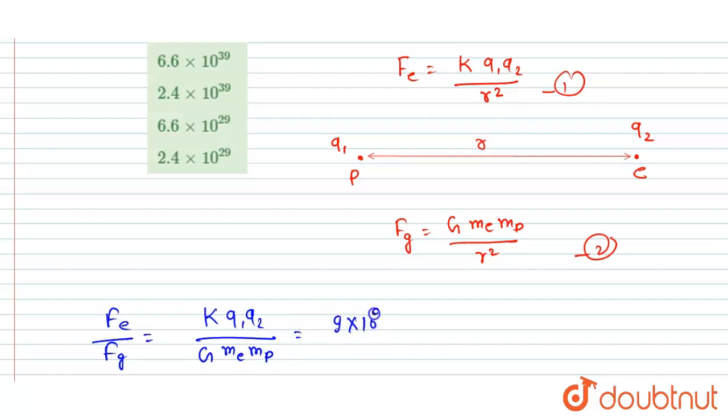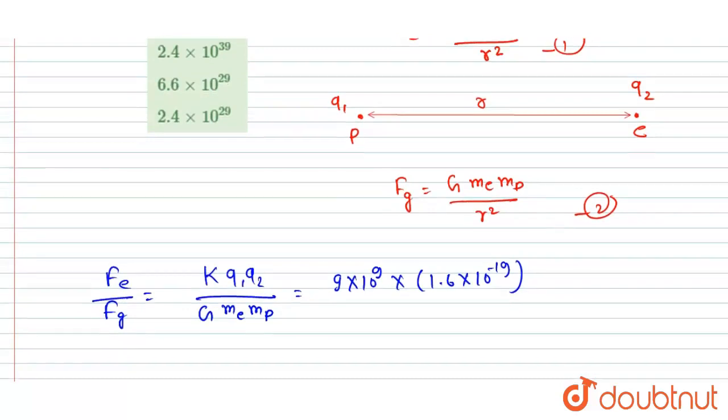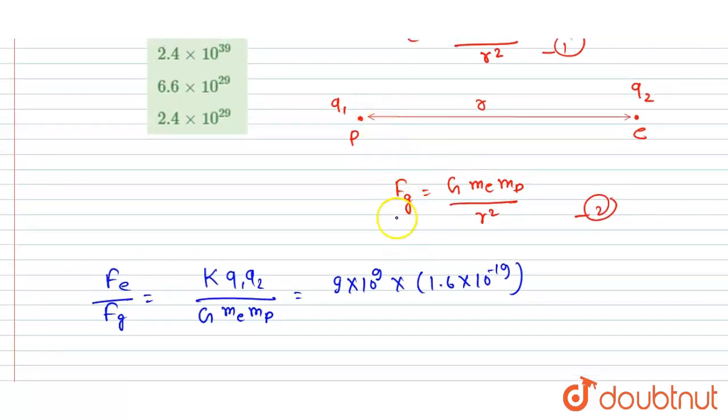And the charge on electron as well as proton is 1.6 × 10⁻¹⁹ coulomb, right. So here the force will be attractive since the proton is positively charged and the electron is negatively charged, but the magnitude will be this. And if I talk about G,